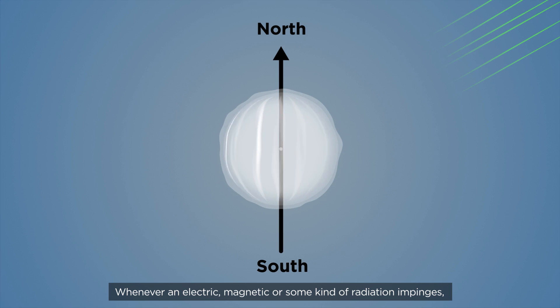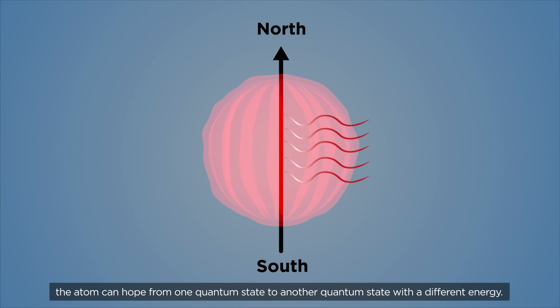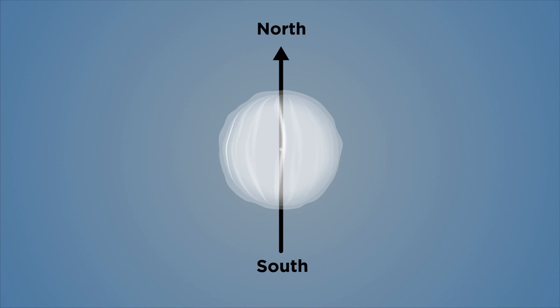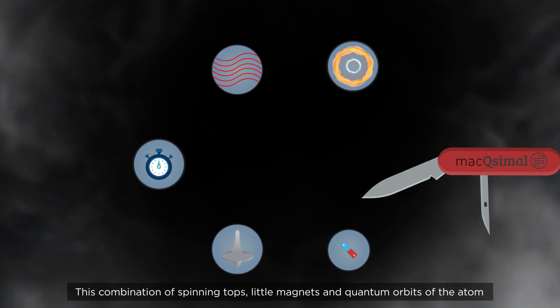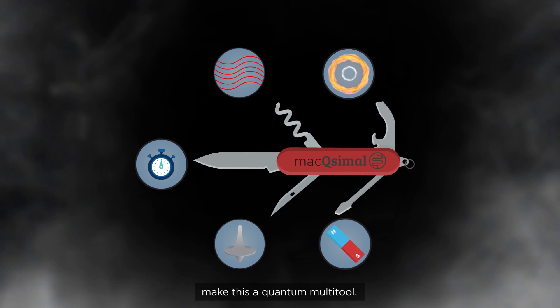Whenever an electric, magnetic, or some kind of radiation impinges, the atom can hop from one quantum state to another quantum state with a different energy. This combination of spinning tops, little magnets, and quantum orbits of the atom make this a quantum multi-tool.